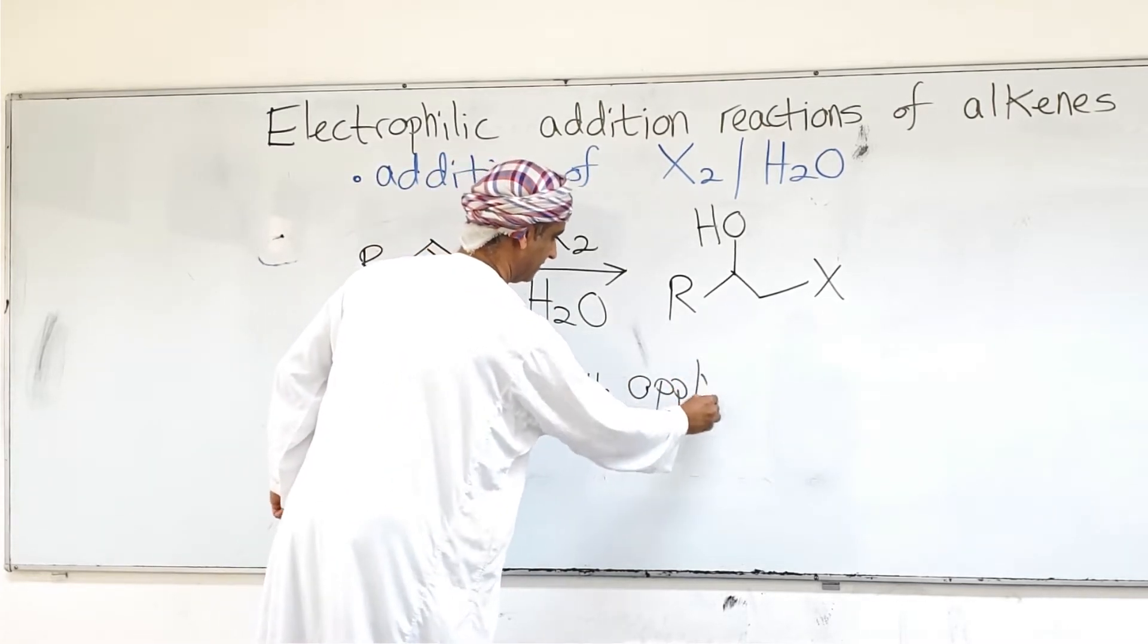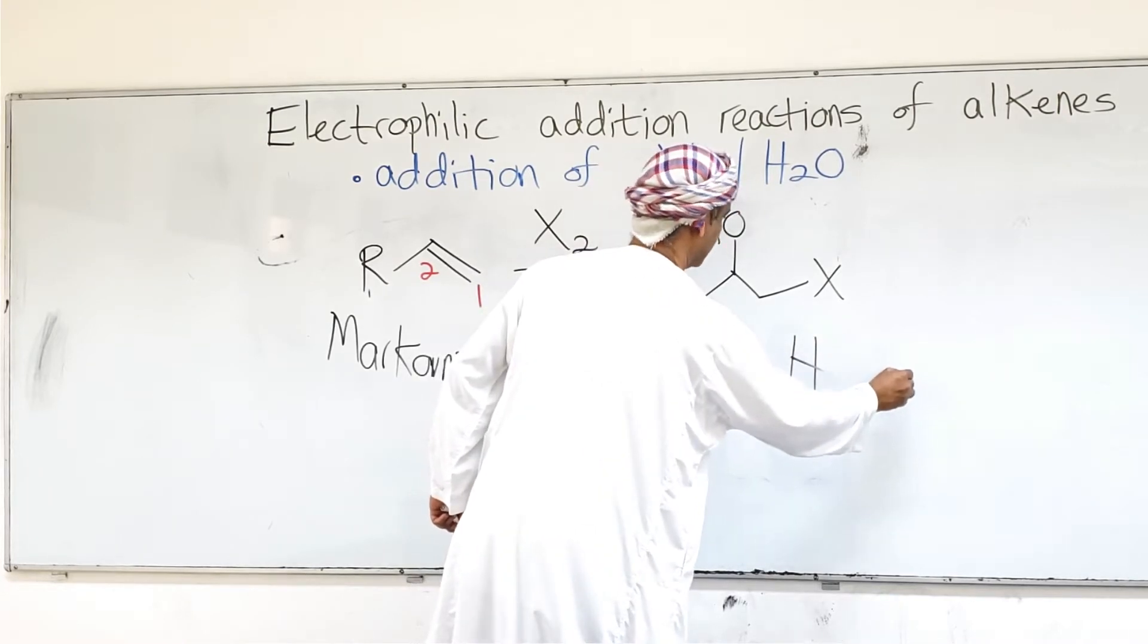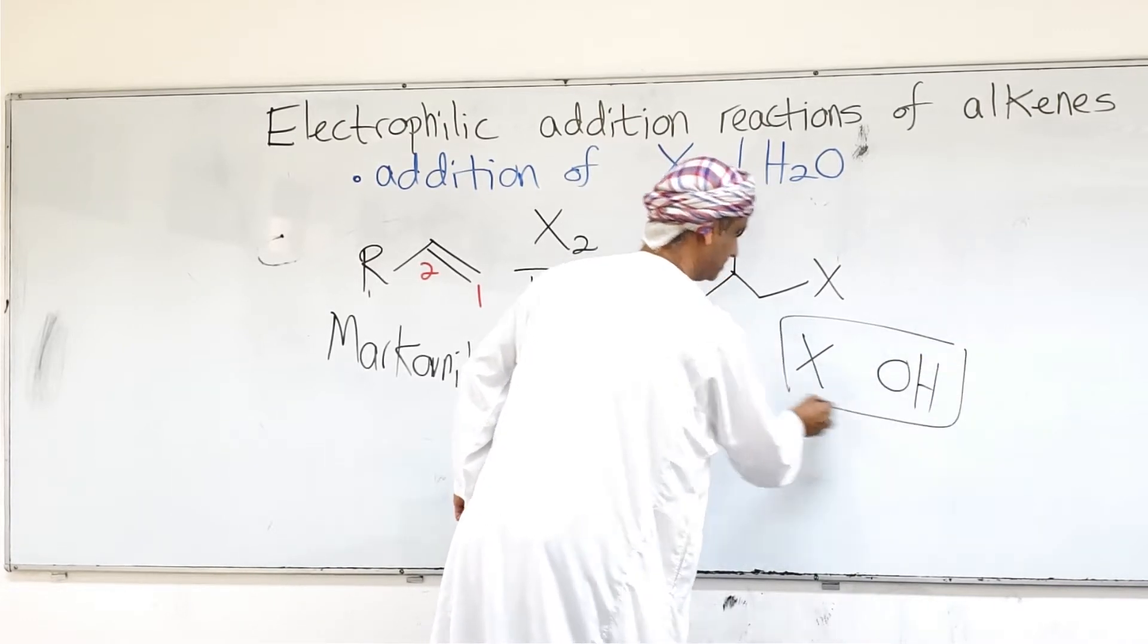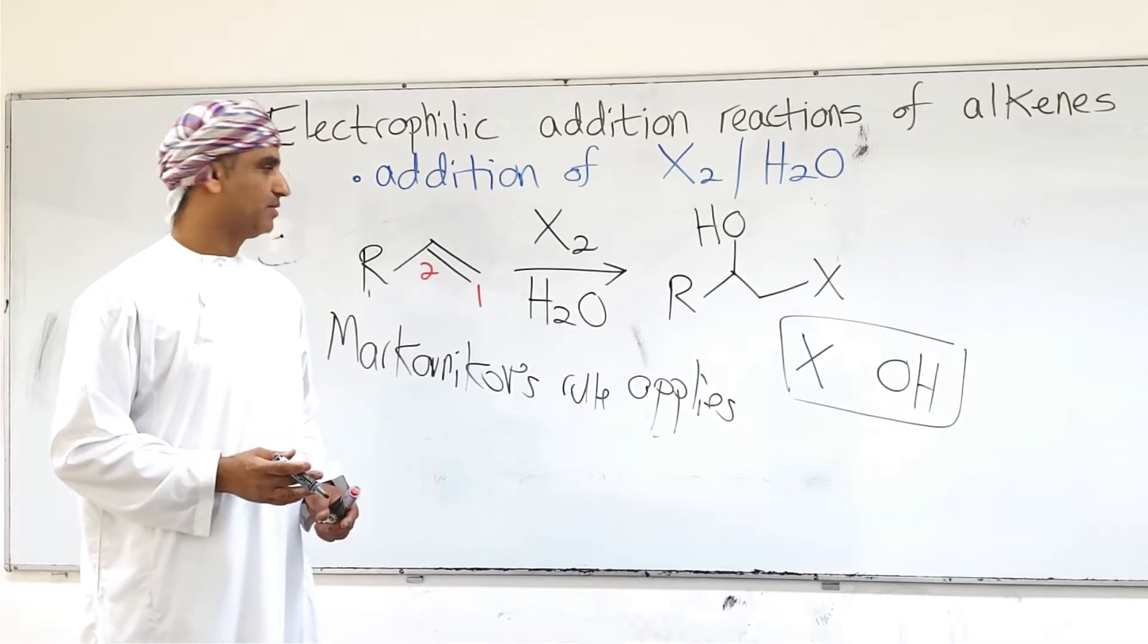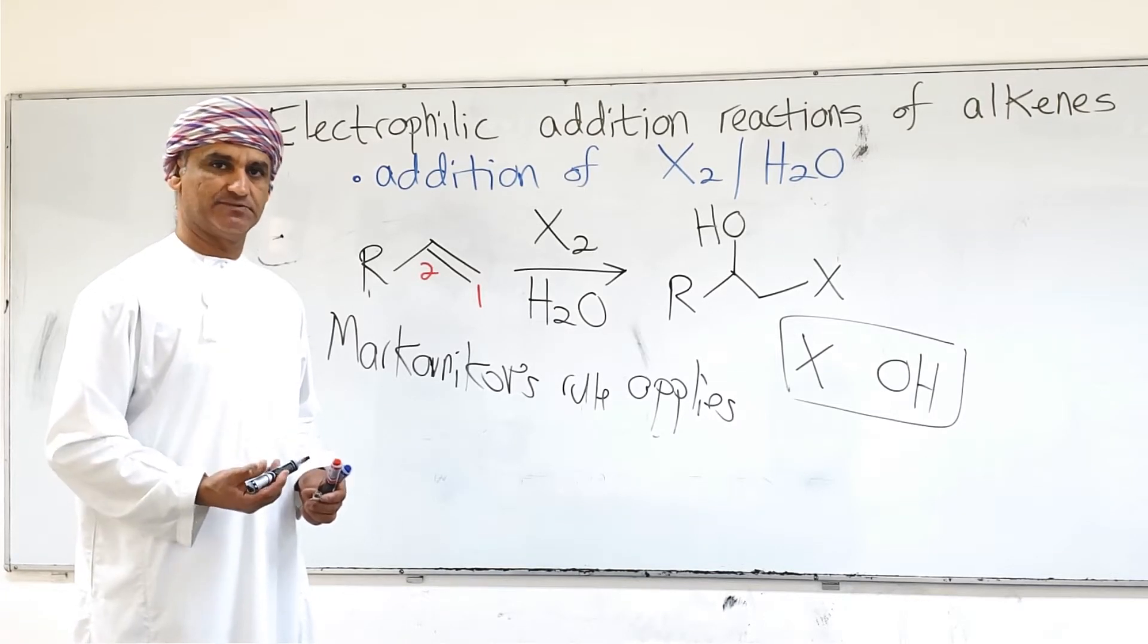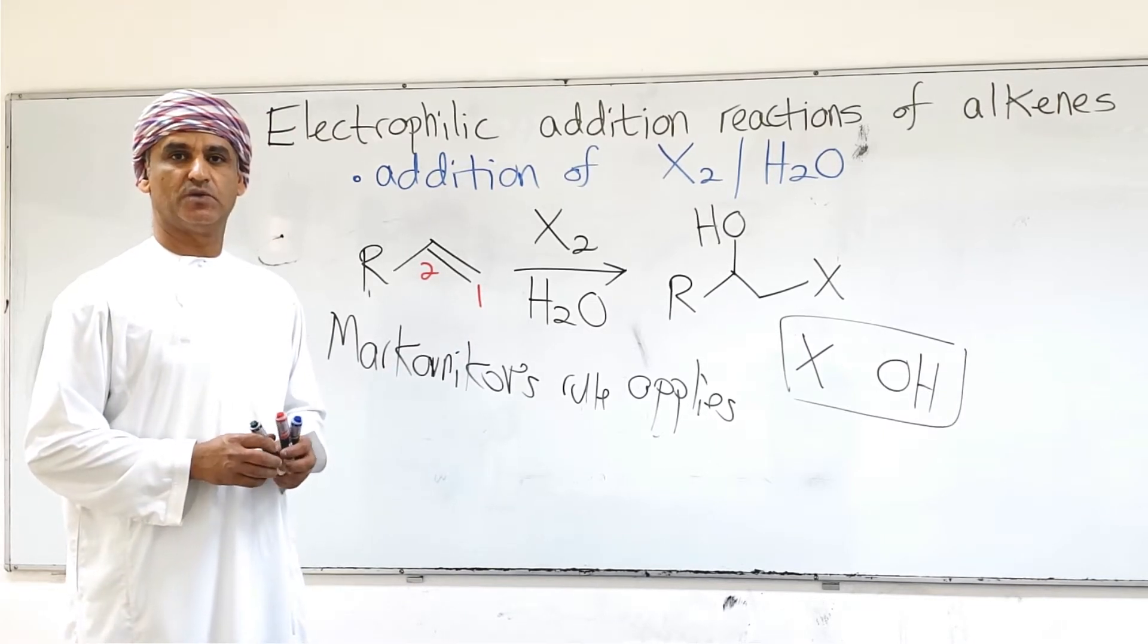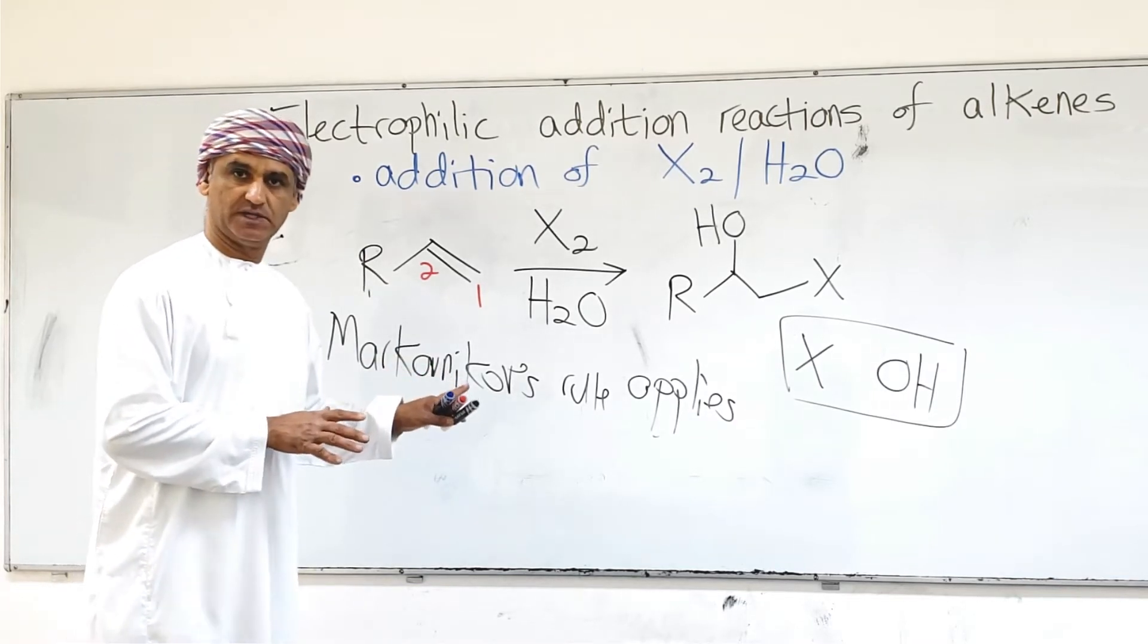Remember, this is viewed as addition of X and OH. So this is viewed as addition of X and OH, X bonds to carbon-1, or the carbon that has more hydrogens, or less alkyl substituents, and OH bonds to carbon-2, which has less hydrogens, or more alkyl substituents. So again, Markovnikov's rule applies.